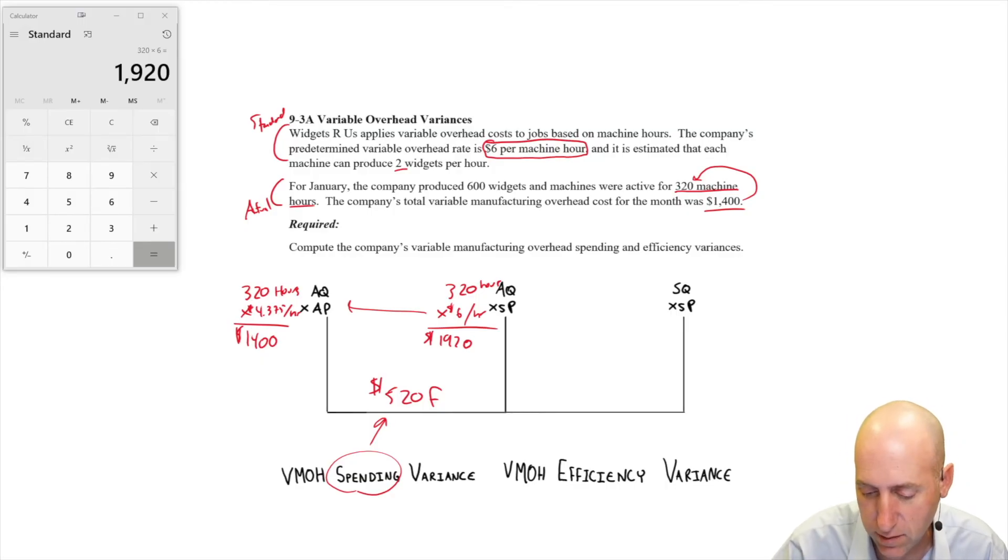Let's move over to the efficiency variance. SQ times SP. Well, the SP remains six. SQ, we answer the question, given the fact that we produced 600 widgets, how many hours should it have taken? Well, it's supposed to take two widgets per hour. So 600 divided by two means it should have taken us 300 hours. So that's our SQ.